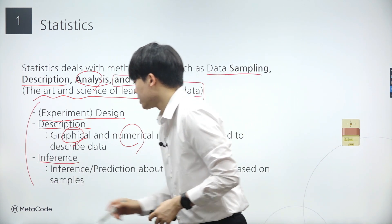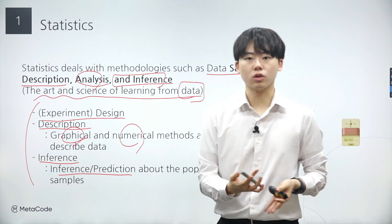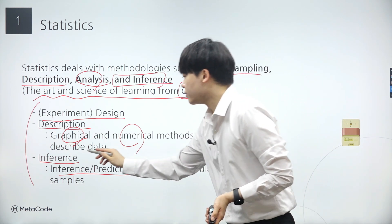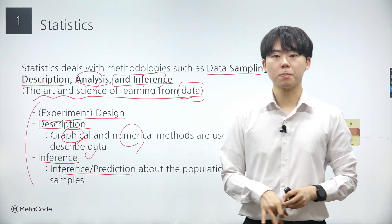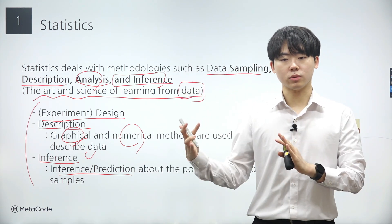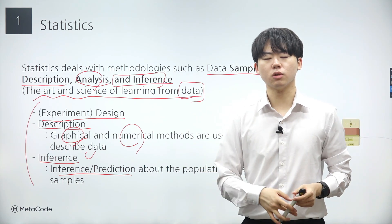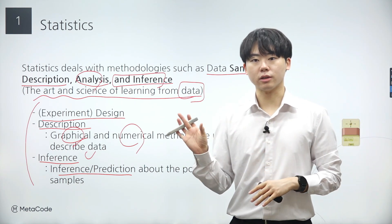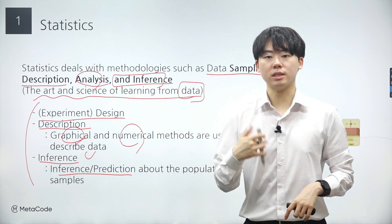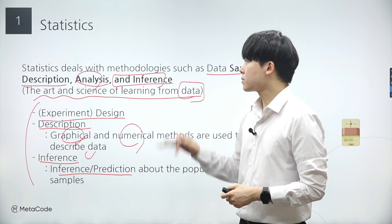Data inference is a statistical method used to make predictions based on available data. Additionally, there are several other subcategories in statistics including data sampling and the Bayesian approach, which offers a distinct perspective on data. These are just a few examples of the subcategories that make up the field of statistics.